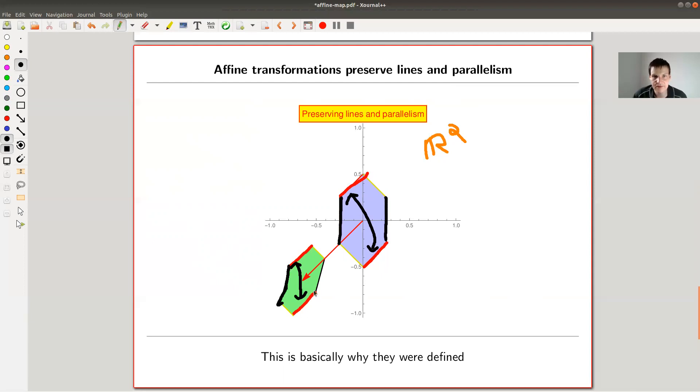And what is also preserved is that they're still parallel to one another. They started out to be parallel and they end up to be parallel. Same for this one and this one, they end up here. Still lines, they're still parallel. Same for the yellow ones here and here, they're still lines and they're still parallel. So affine transformations are built to preserve lines and parallelism. And that's basically what makes them so important.